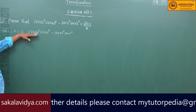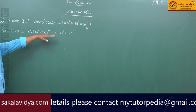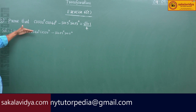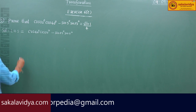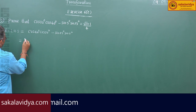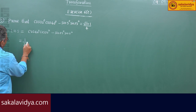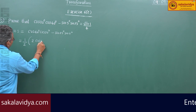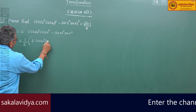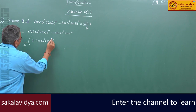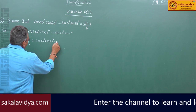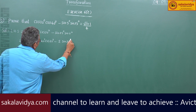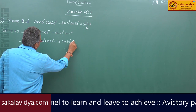This is just like the form cos a·cos b - sin a·sin b. So we multiply and divide by 2, and write it as half times (2·cos40·cos20 - 2·sin25·sin5).